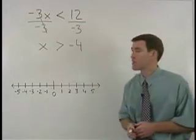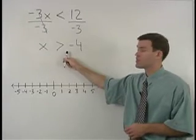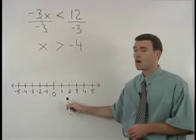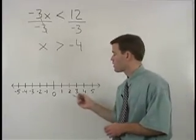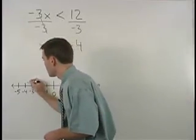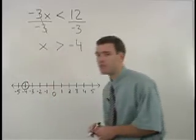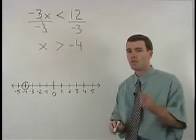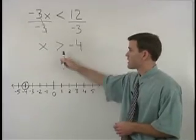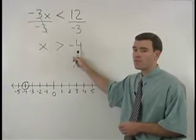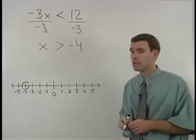Our next task is to graph x is greater than negative 4 on a number line. To do that, we start with an open dot at negative 4. The reason we use an open dot at negative 4 is that x is greater than negative 4 but it is not equal to negative 4.